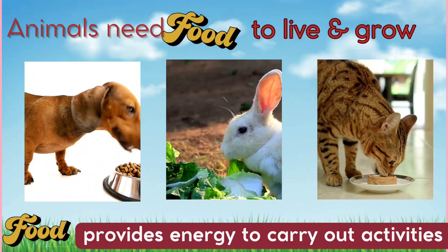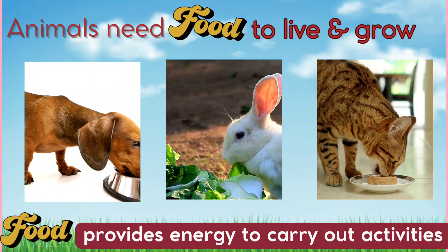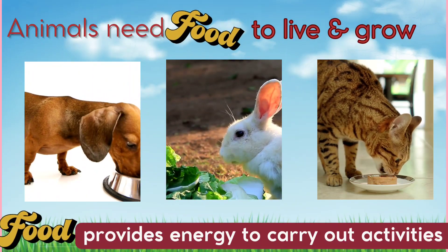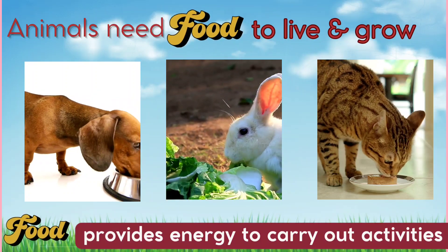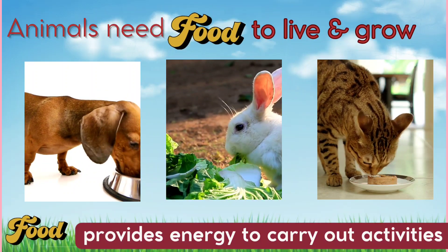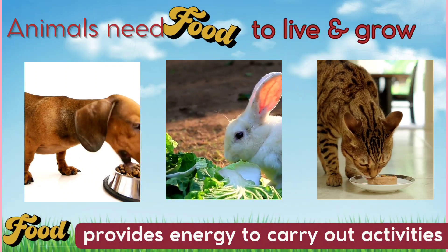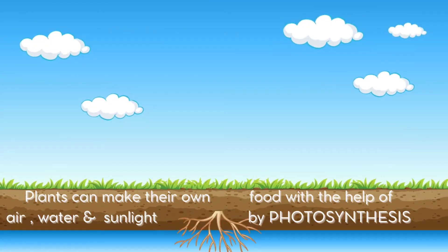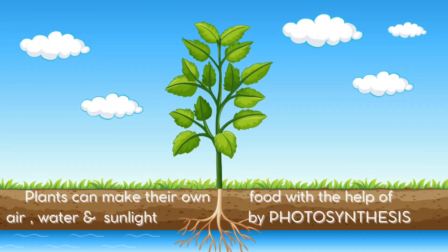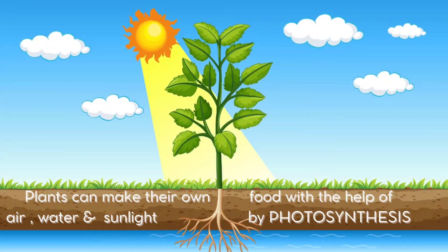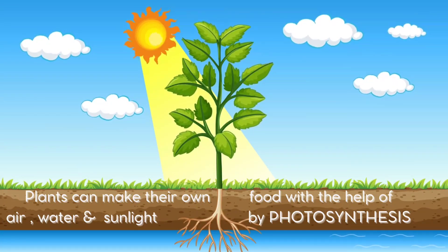Animals need food to live and grow. Food provides energy to carry out different activities. Did you know that plants can make their own food with the help of air, water and sunlight by a process called photosynthesis?